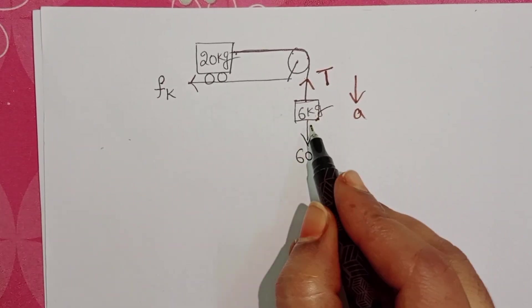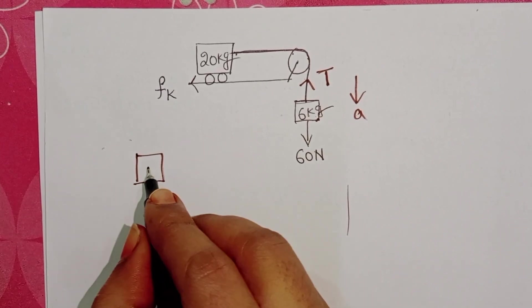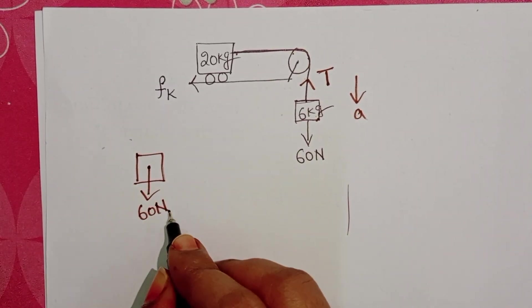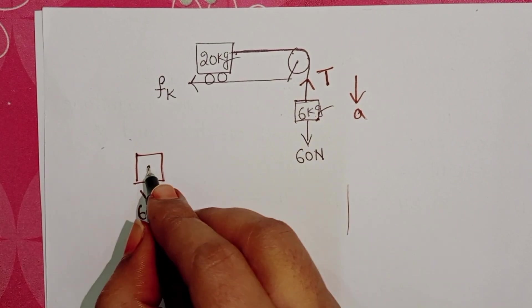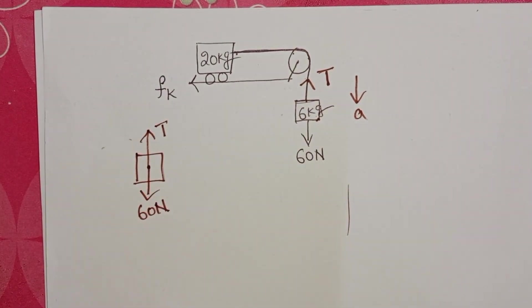First, draw the free body diagram of the 6 kg block. Weight acting in the downward direction, given weight is 60 N. And tensional force, we don't know - it is acting in the upward direction.